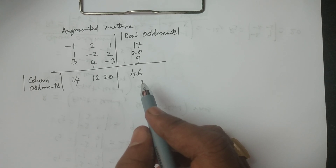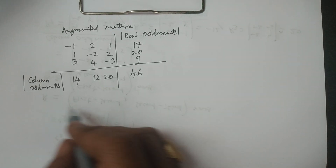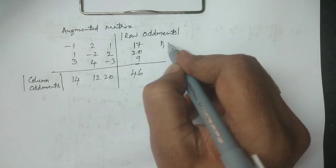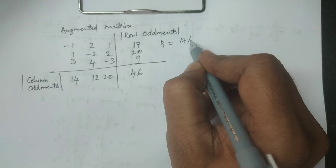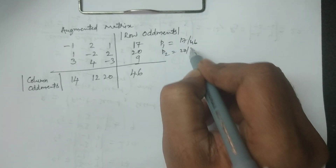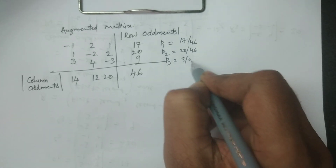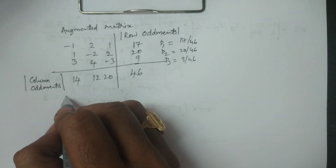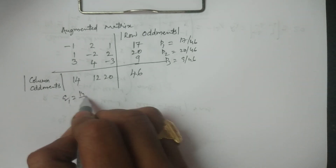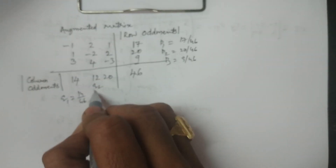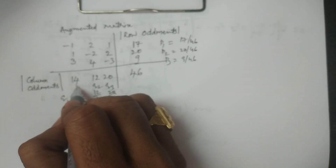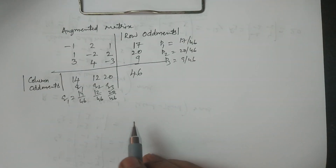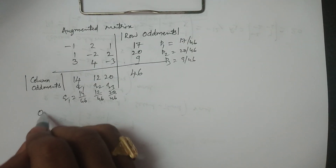By using this method we can calculate the solution. Against the rows we write the fractions: p1 equals 17 by 46, p2 equals 20 by 46, p3 equals 9 by 46. Similarly q1 equals 14 by 46, q2 equals 12 by 46, q3 equals 20 by 46.